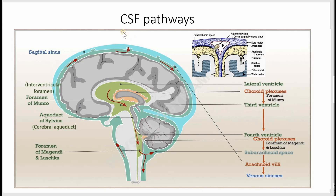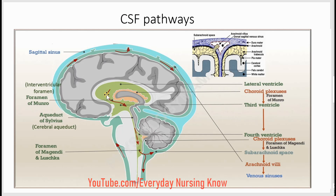Cerebrospinal fluid is produced by the choroid plexus in the lateral ventricles. From the lateral ventricle it flows to the third ventricle through a canal called the interventricular foramen or foramen of Mundra. From the third ventricle it flows to the fourth ventricle through a canal called the cerebral aqueduct or aqueduct of Sylvius.